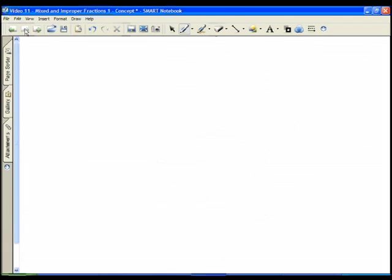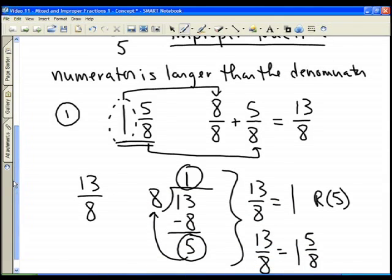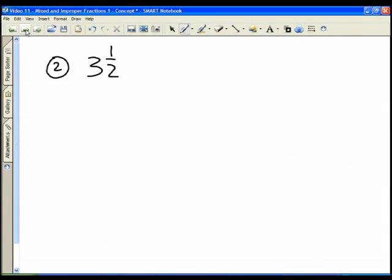I'm going to do a few more examples here, just to make sure that you get the concept. So let's look at something like 3 and 1/2. Well, 3 and 1/2, and I'm going to do this one the same way, and then a little bit of a different way. Remember what we did here. We said, hey, 1 and 5/8 was really like 8/8 plus 5/8. So 3 and 1/2 is really like 3 plus 1/2.